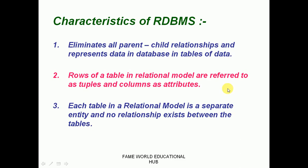Rows of a table in the relational model are referred to as tuples, and columns as attributes. Each table in the relational model is a separate entity — each table has its own identity. In the relational database, we have tables called entities, and these tables in the relational model are separate entities with no direct parent-child relationship between them. This is how RDBMS eliminates the parent-child relationship between tables.